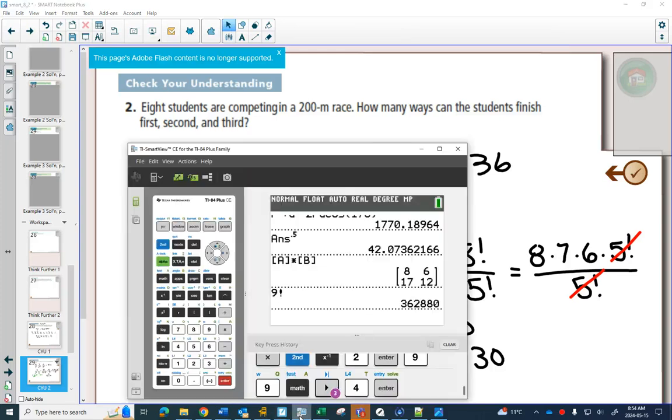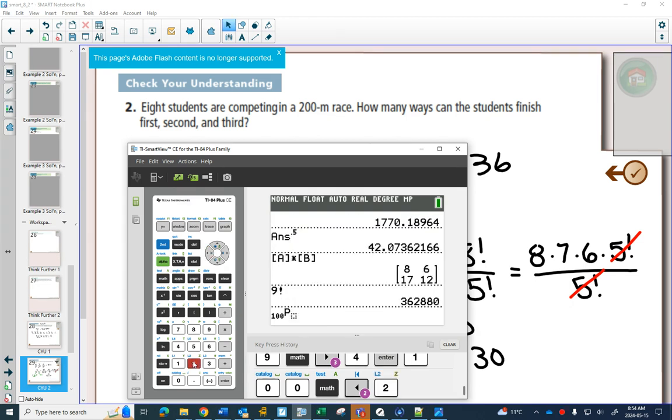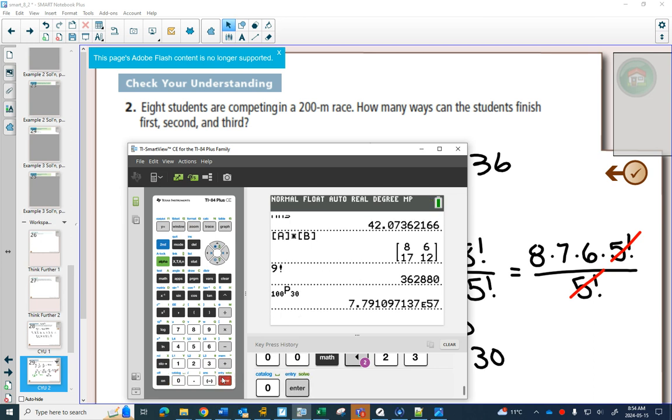Now, there is the P button on your calculator as well. So if you have a graphing calculator, I don't even know, this might be too big for, let's see if the numbers are too big for the calculator. Hit math, go over to probability, and number 2 is nPr. So you go 100 P 30.